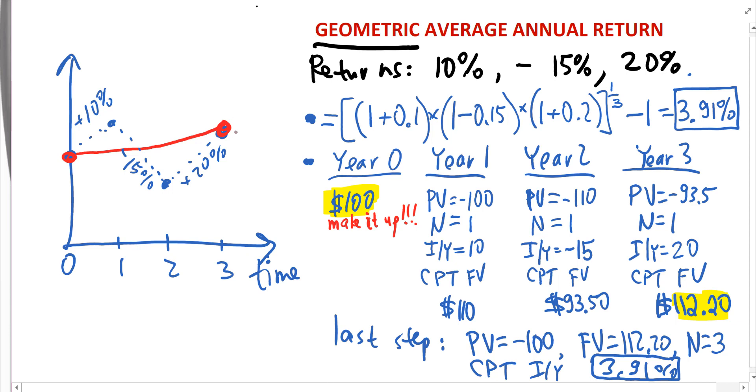for example, to something at the end of three years which in our example is $112.20, right? So we have plus 3.91% per year and I'm going to add something clarifying: compounded annually, right?